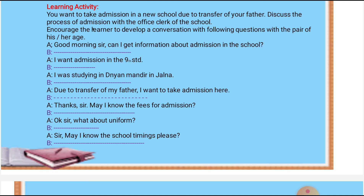A: Thank you sir. May I know the fees for admission? B: Yes, the processing fee is one hundred rupees and the school fees are one thousand rupees per year. A: Okay sir, what about the uniform? B: We have a uniform of brown pants and a light brown shirt. A: Sir, may I know the school timings please? B: Yes, the school timings for the ninth standard are 7:20 to 12:20.